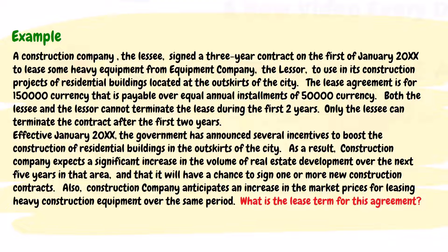Effective January 20XX, the government announced several incentives to boost the construction of residential buildings in the outskirts of the city. As a result, the construction company expects a significant increase in the volume of real estate development over the next five years in that area, and that it will have a chance to sign one or more new construction contracts. Also, the construction company anticipates an increase in the market prices for leasing heavy construction equipment over the same period. What is the lease term for this agreement?